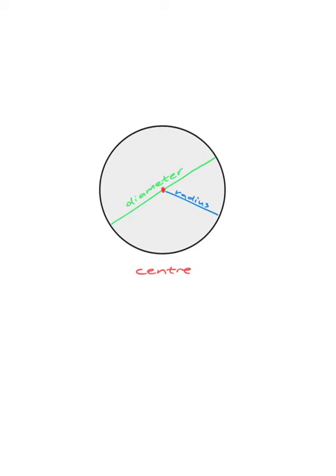The first thing that we need in a circle is the center of the circle. If we go from the center out to the edge of the circle, we have what is known as a radius. And then if we go from one edge of the circle all the way to the other edge, through the center of the circle — it has to be through the center — then what we have is the diameter.